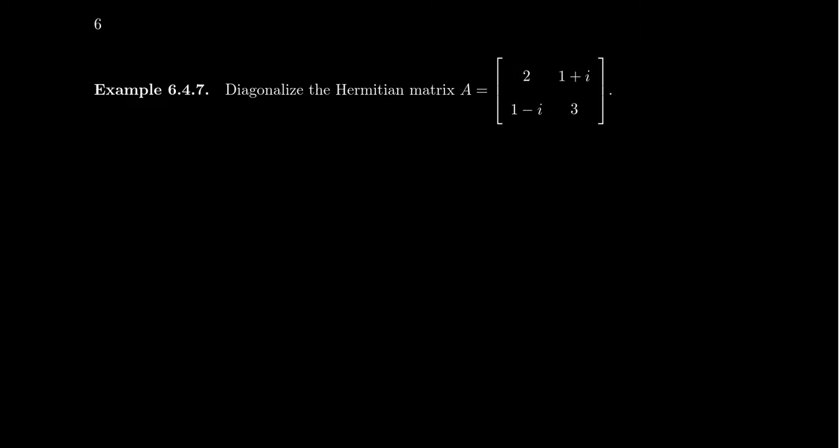Let us once again perform the whole enchilada — diagonalize a matrix without knowing any of its eigen theory or spectral results from the beginning. We're going to do this with a complex matrix, but this complex matrix will be Hermitian. If we take the conjugate transpose of A we get back A, and so when we diagonalize this we can actually do a unitary diagonalization. Let's begin by looking for the eigenvalues.